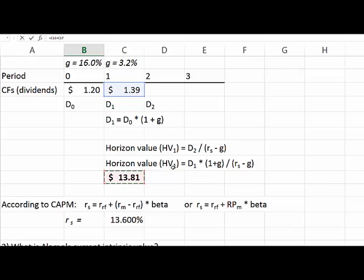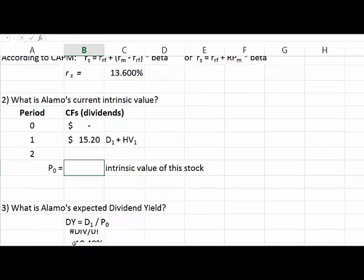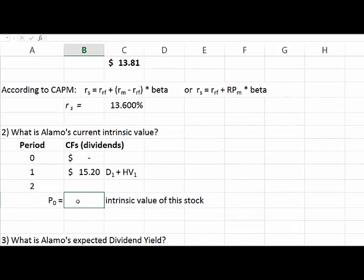This is in year one, also in D1, so we can add these together. We use the function called net present value. The rate we use is our RS, which we found. We select this value. We find the present value is $13.38.